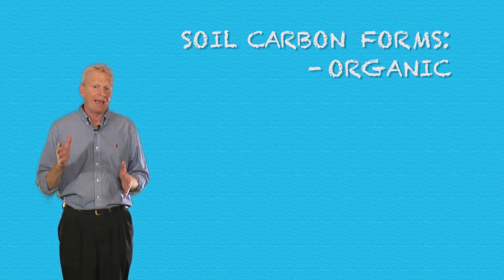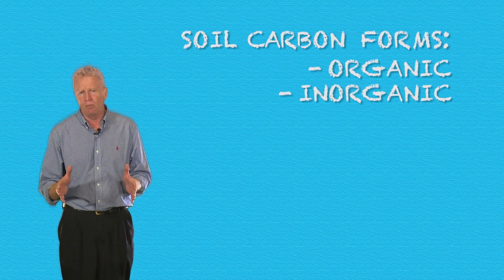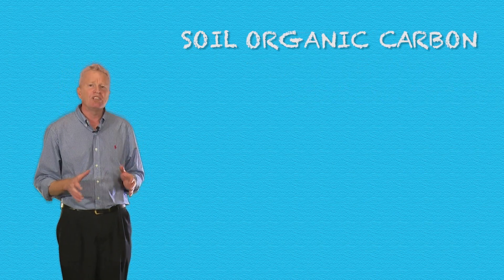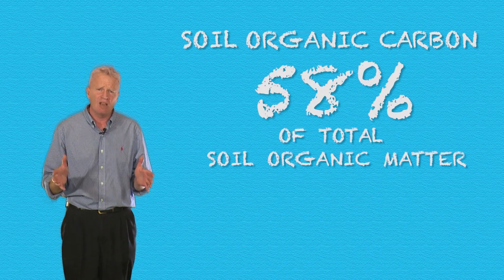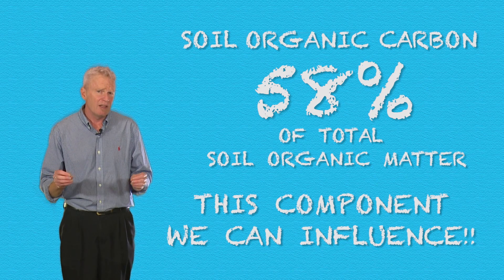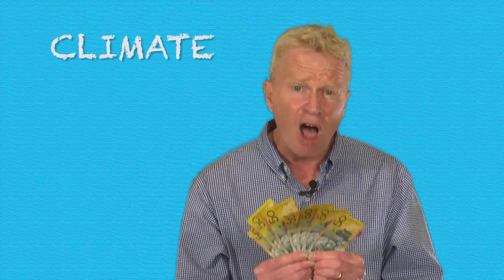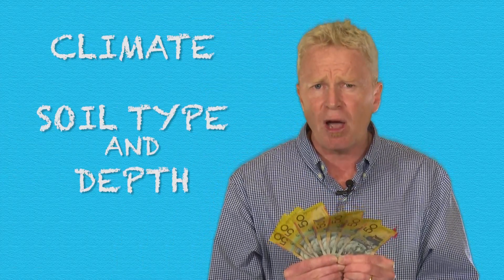Soil carbon comes in both organic and inorganic forms. Here, a focus will be on soil organic carbon, which typically makes up 58% of the total soil organic matter content, and it's this component that we can most readily influence. Stored soil carbon is a bit like inheriting a bank account, with the size of your soil carbon bank balance being mainly driven by natural primary productivity. The two most influential factors are climate and soil type and depth.